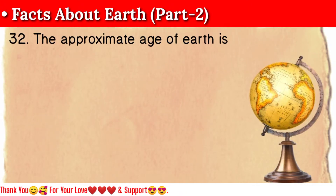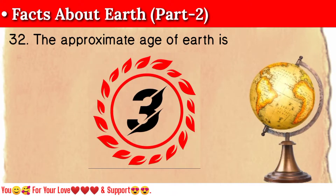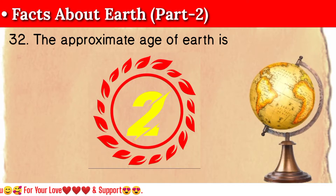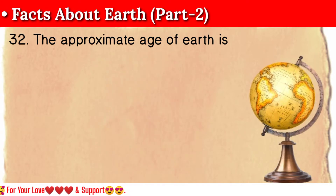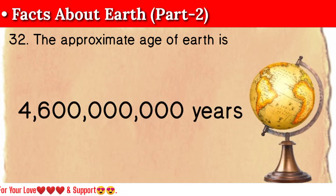Question 32: The approximate age of Earth is 4 billion 600 million years.